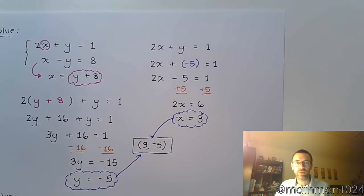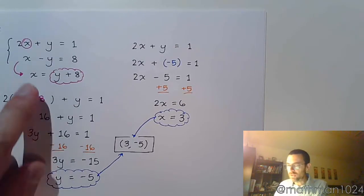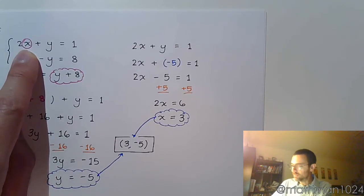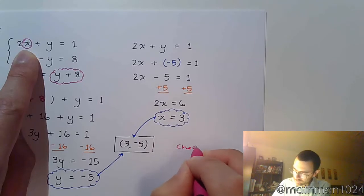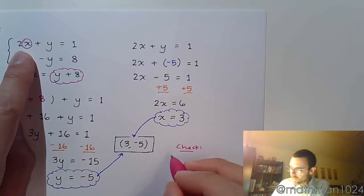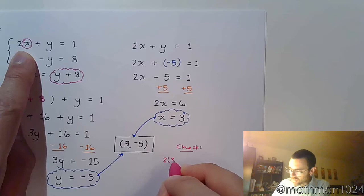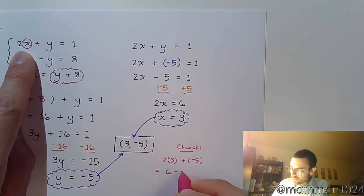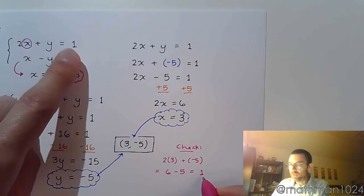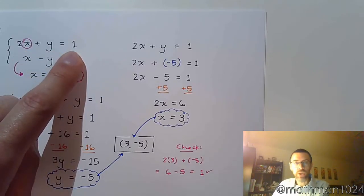If I look at this first equation right here, let's check this. If I do 2 times X, that's 3, plus negative 5. We get 6 minus 5, which equals positive 1. And that's what we're supposed to get. So we can check that off.